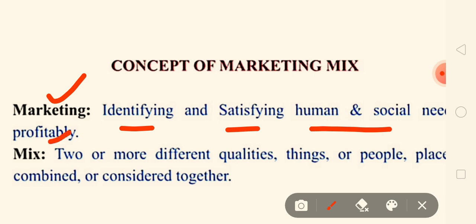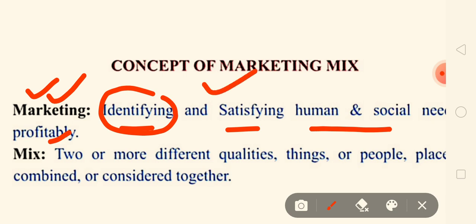We have to identify what the social and human needs of customers are, and accordingly we have to earn profit also. First of all, we should survey what the needs of the customer are — that is called marketing. Now, 'mix' means two or more different qualities, things, people, or places combined or considered together.